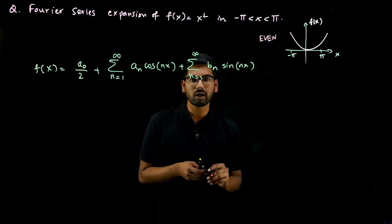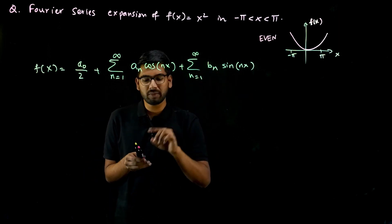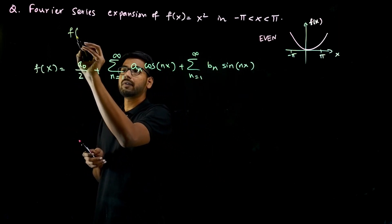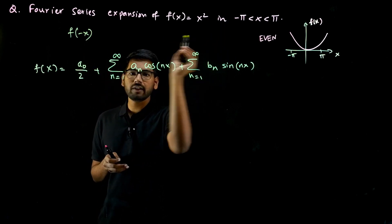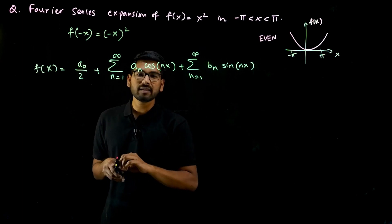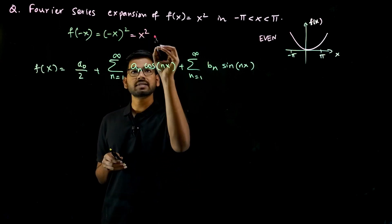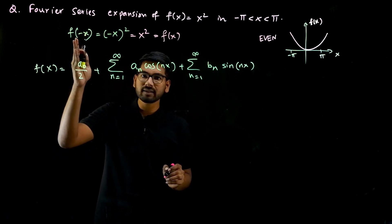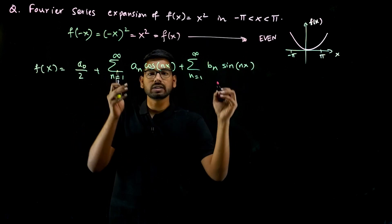Even if you don't know how to draw the graph of the given function, you can find if the function is even or not by this method. If you find f of minus x, and f of x is equal to x squared, then f of minus x is minus x whole squared, which is nothing but x squared, which is nothing but f of x. So if f of minus x equals f of x, these functions are called even functions.